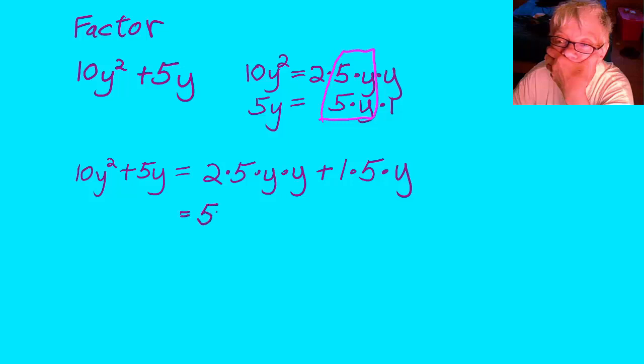We're going to factor out the GCF, 5y. And inside the parentheses, we're going to put the leftovers, 2y plus 1.